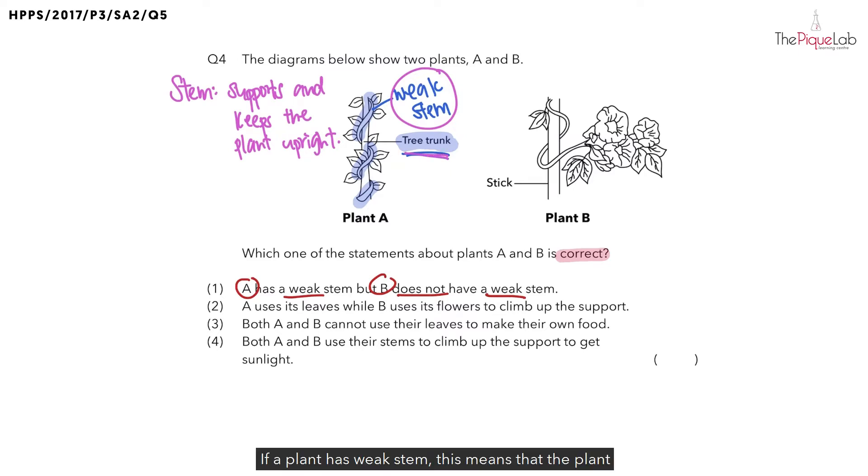If a plant has weak stem, this means that the plant is not able to stand upright. And what do you think will happen to the plant if the plant cannot stand upright? The plant might not be able to trap enough sunlight. And what do you think will happen to the plant if the plant cannot trap enough sunlight? The plant will not be able to carry out enough photosynthesis and it will not be able to make enough food.